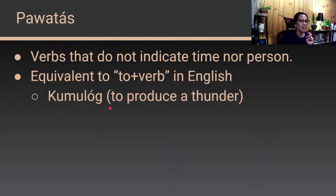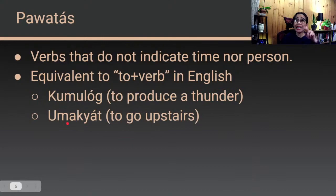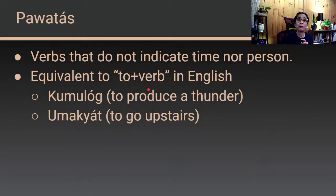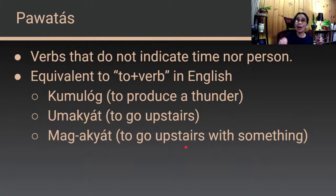For example: kumulog. The root word kulog refers to thunder, so kumulog means 'to produce thunder' — following the format of 'to plus verb.' Another example: umakyat. The root word is akyat, meaning 'to go upstairs.' So umakyat means to go upstairs. Early on you already have a hint on how to differentiate umakyat and magakyat.